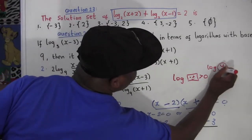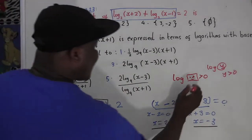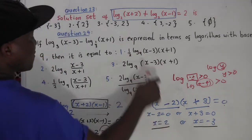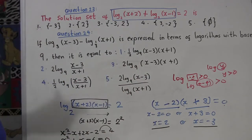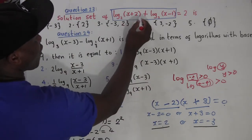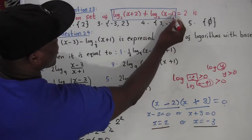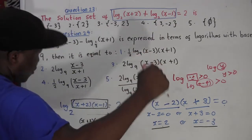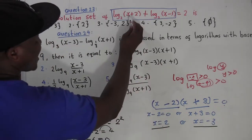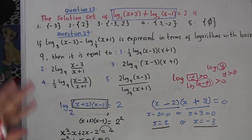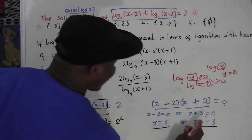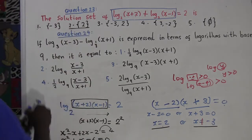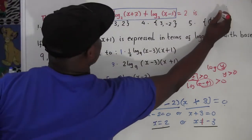Let's test both values. If x equals 2: log of (2 plus 2) equals log of 4 — positive, fine. Log of (2 minus 1) equals log of 1 — positive, fine. Both terms work. Now test x equals negative 3: negative 3 plus 2 equals negative 1, so we'd get log of negative 1 — that's a problem. We don't want log of a negative number, so x equals negative 3 does not qualify. The solution set is x equals 2, which is option 2.